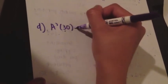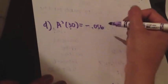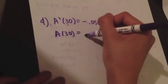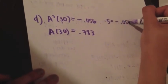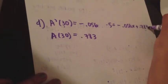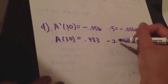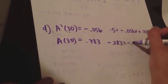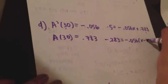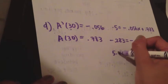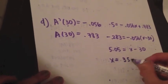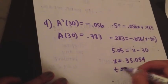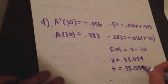To use the line tangent at t equals 30, which is L of t, to approximate when the clippings equal 0.5, first find a prime of 30, which equals negative 0.056. Then find a of 30, which is 0.783. Using these to write the equation of the tangent line and setting it equal to 0.5 gives 0.5 equals negative 0.056 times (x minus 30) plus 0.783. Subtracting 0.783 from both sides gives negative 0.283 equals negative 0.056 times (x minus 30). Dividing by 0.056 and adding 30 gives t equals 35.054 days.